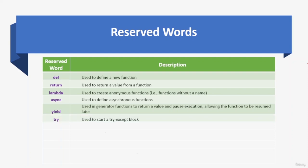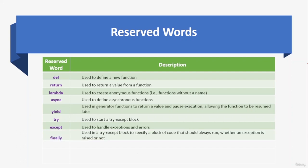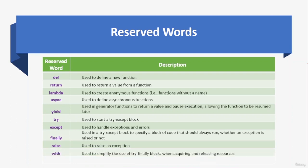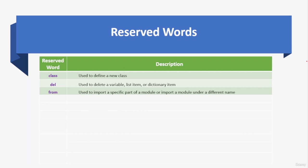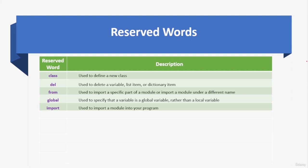'try' starts a try-except block; 'except' handles exceptions and errors; 'finally' specifies a block of code that should always run whether an exception is raised or not; 'raise' raises an exception; 'with' simplifies try-finally blocks when acquiring and releasing resources. 'assert' is used for debugging — checks if a condition is met and raises an error if not. 'class' defines a class; 'del' deletes a variable, list item, or dictionary item; 'from' imports a specific part of a module; 'global' specifies a global variable; 'import' imports a module; 'as' gives a module a different alias.